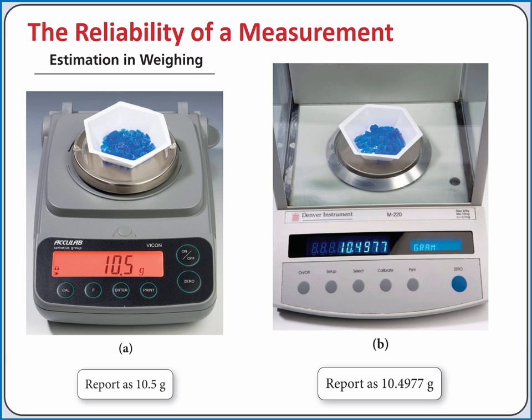We follow this convention because the number of digits we report says something about the instrument we use to make the measurement. For example, if we use the scale on the left, we could report the mass as 10.5 grams. This scale can only tell the difference between 10.5 and 10.6 grams. It cannot tell the difference between 10.49 grams and 10.50 grams.